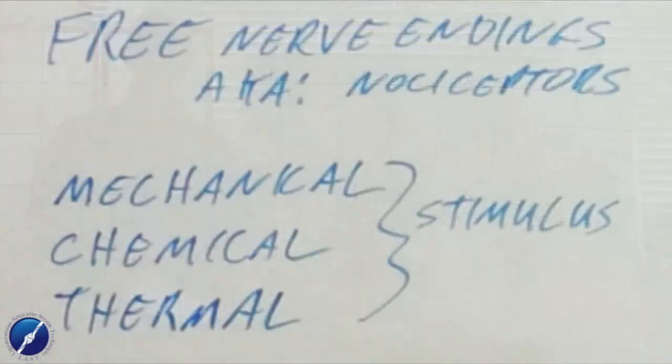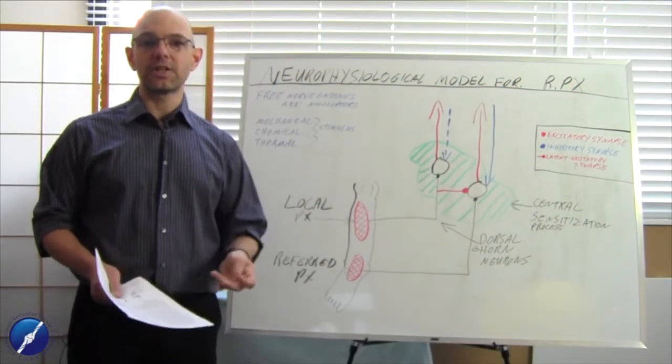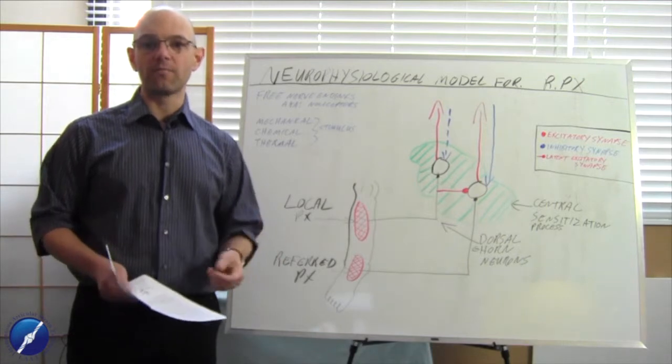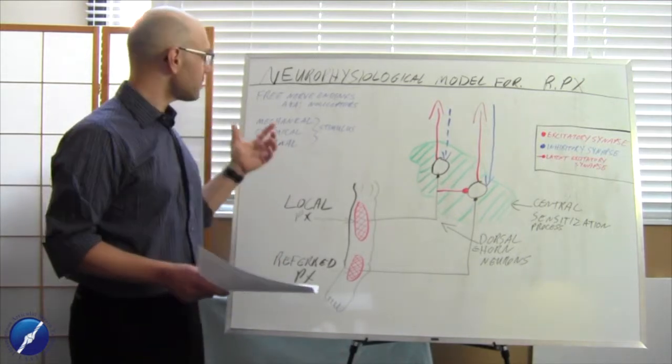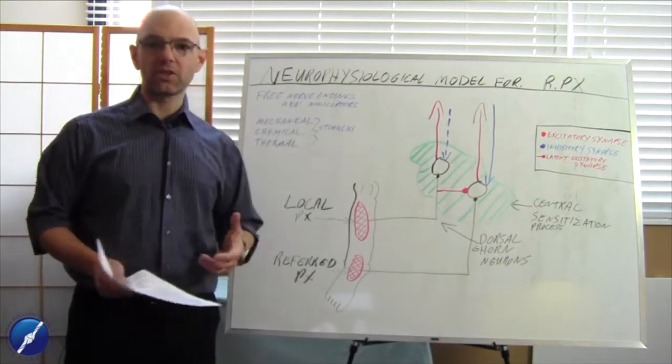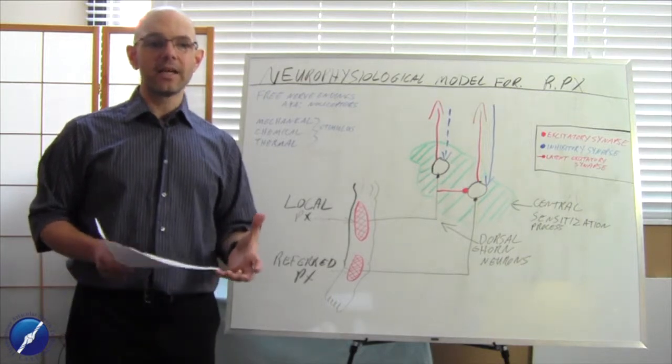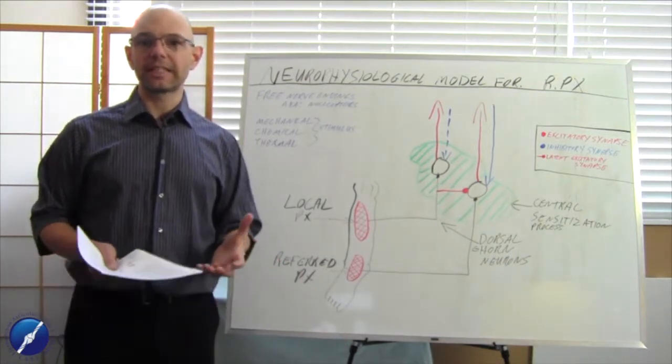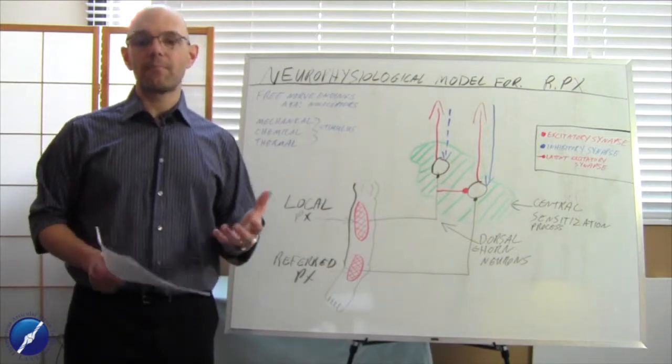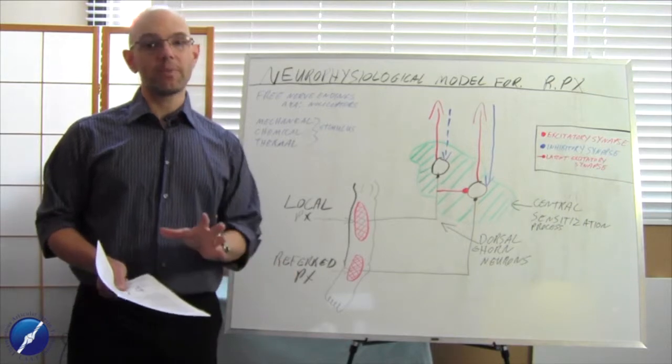What we do need to realize is that we have these free nerve endings that are called nociceptors. Now these free nerve endings are a type of mechanoreceptor and I talk about these mechanoreceptors in the introductory videos of all of my online courses and in all of my live courses also. These free nerve endings are also known as nociceptors.